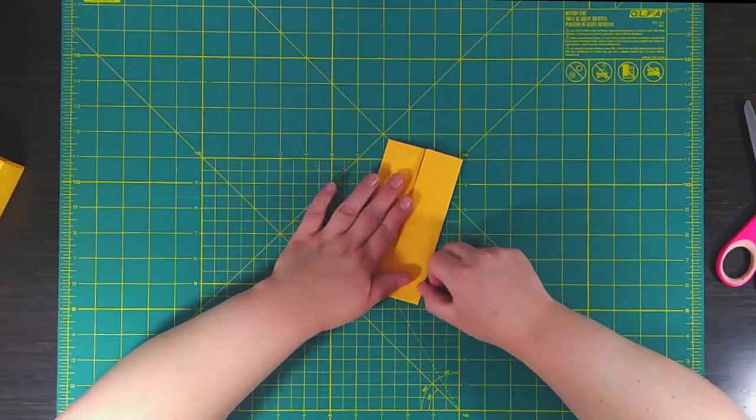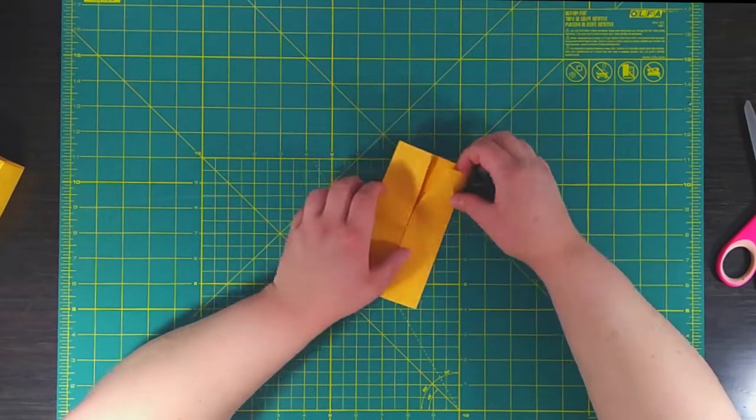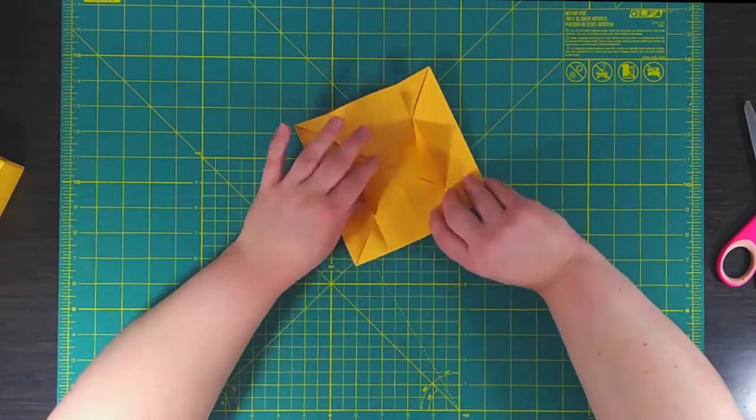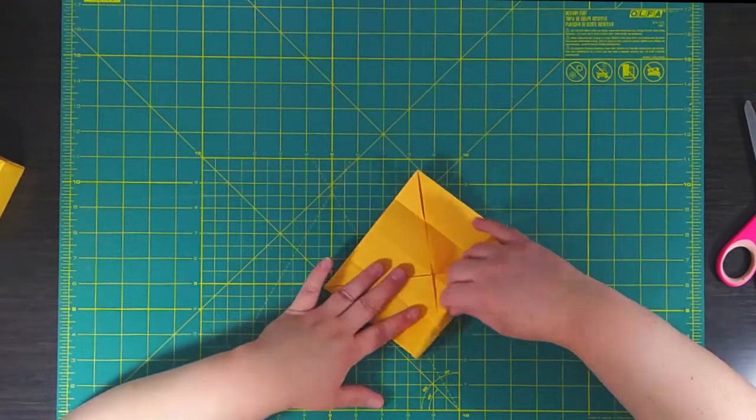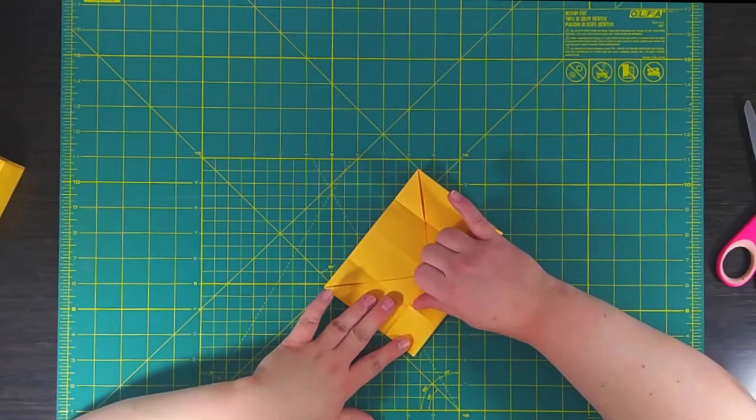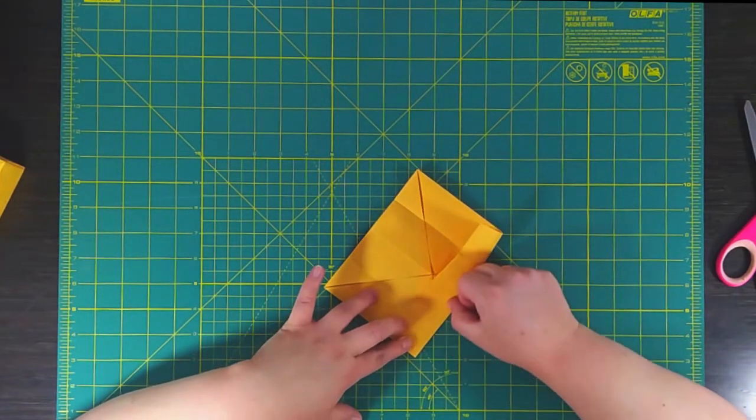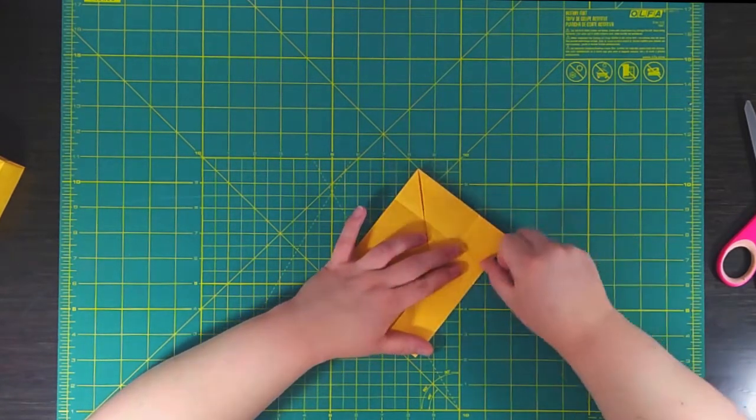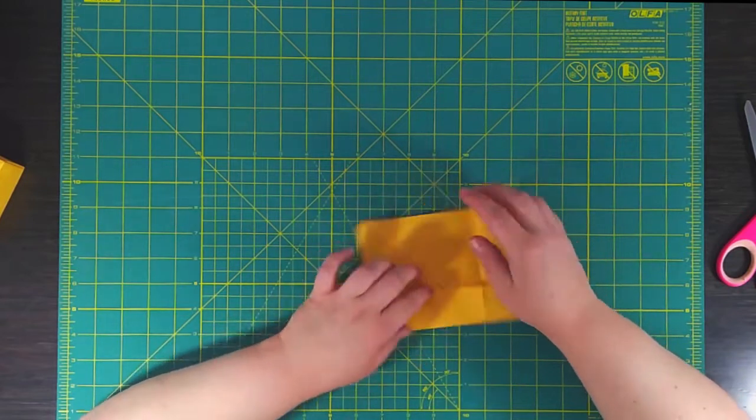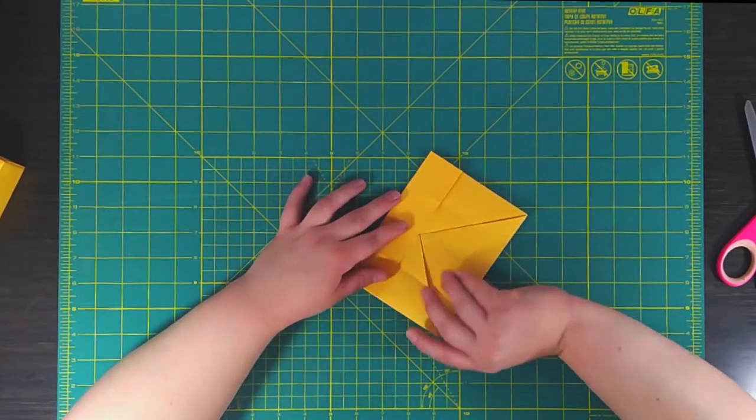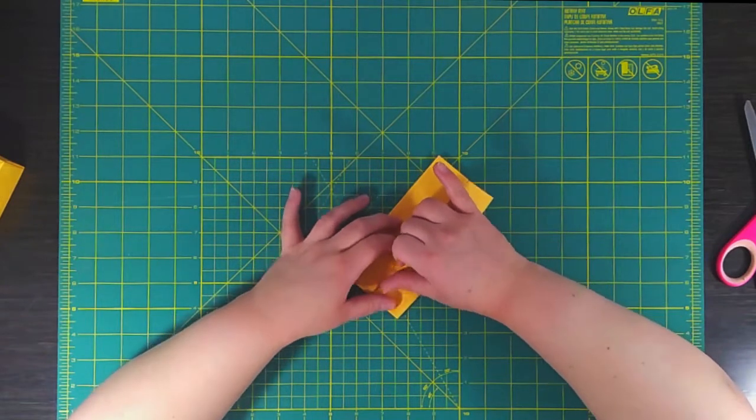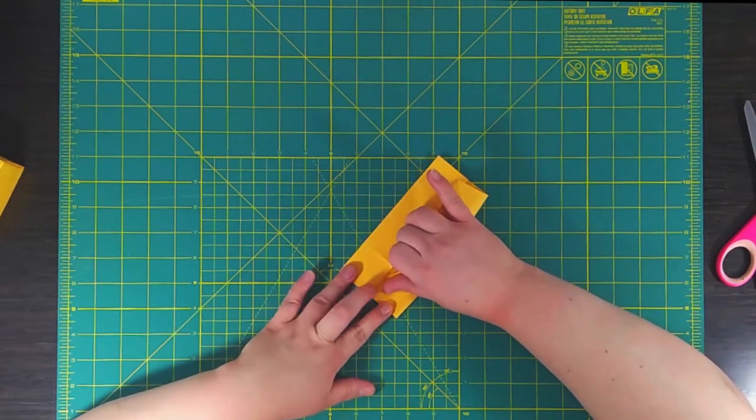Make that edge nice and crisp. Now we're going to unfold it slightly but not all the way. Make sure those corners are still pushed in and we're going to do the same thing on the opposite side again, folding in towards the middle. Do the same thing on the other side again making sure that your edges are not overlapping.